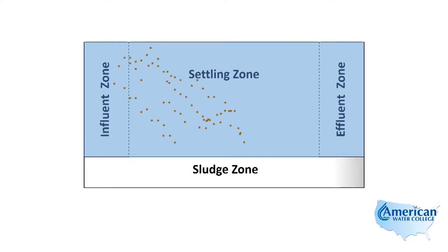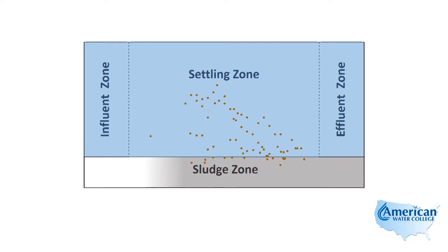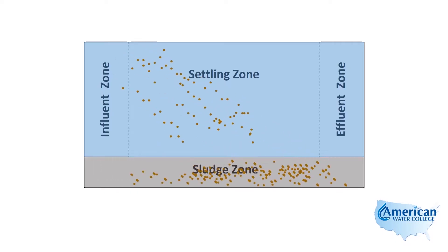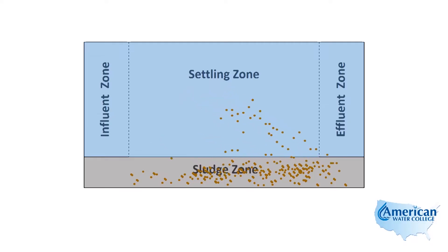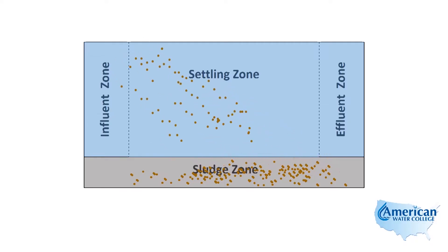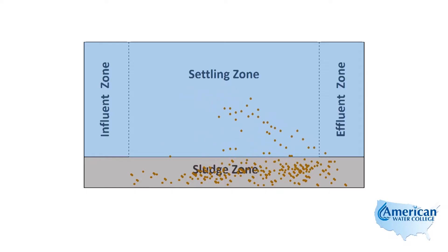On the bottom we have the sludge zone — this is where the settled solids collect. These are the four main zones of a conventional sedimentation basin, whether rectangular or circular: the influent zone, the settling zone, the effluent zone, and the sludge zone.